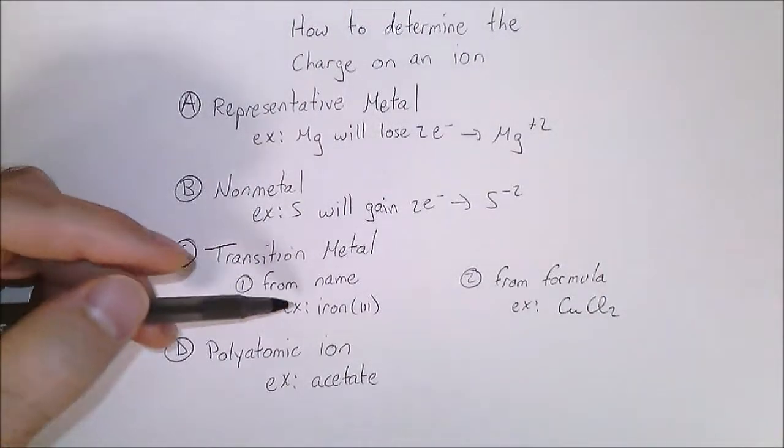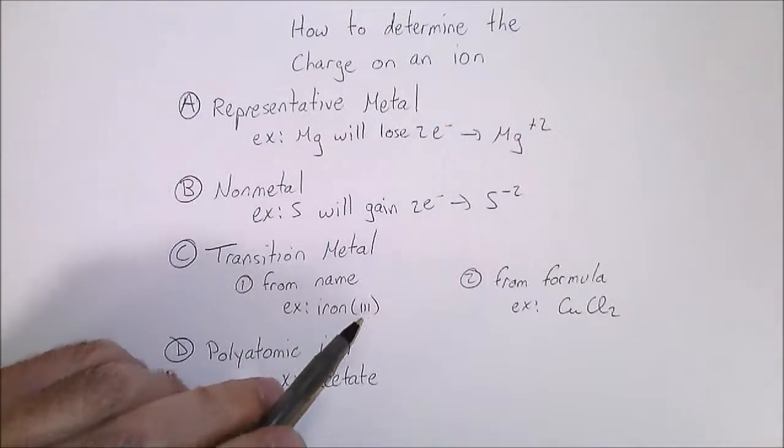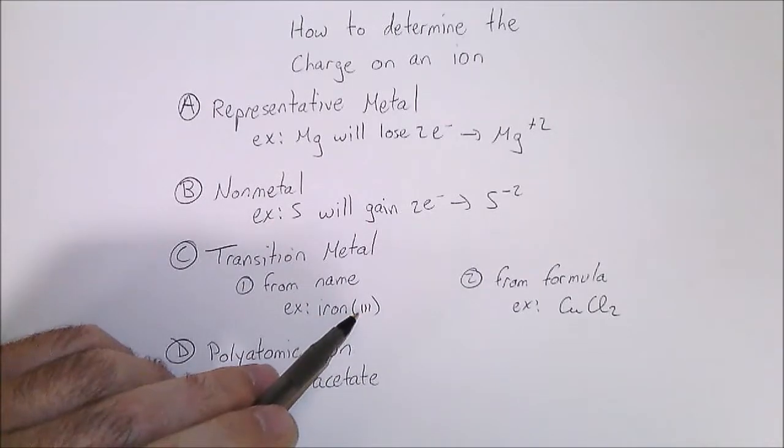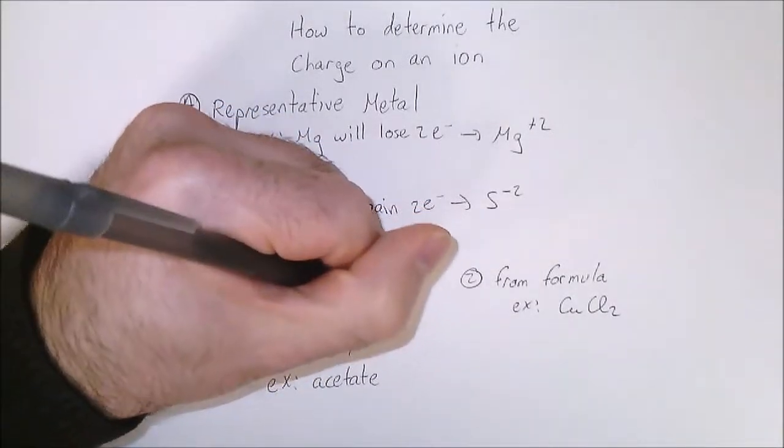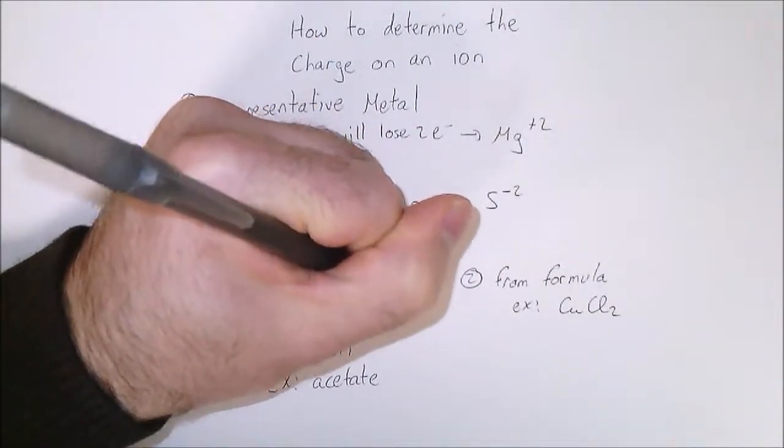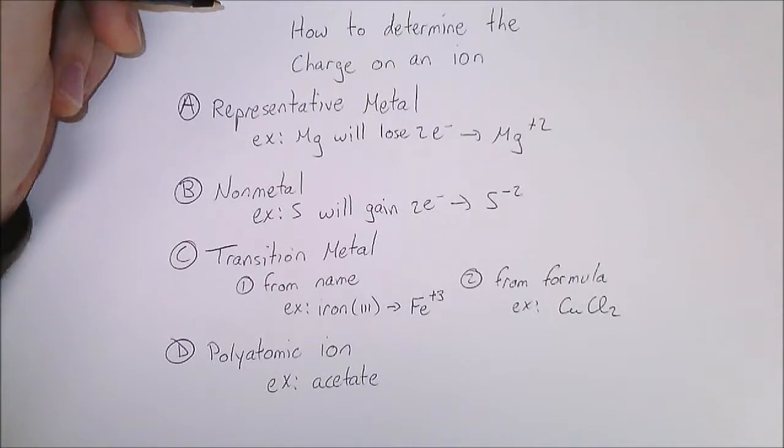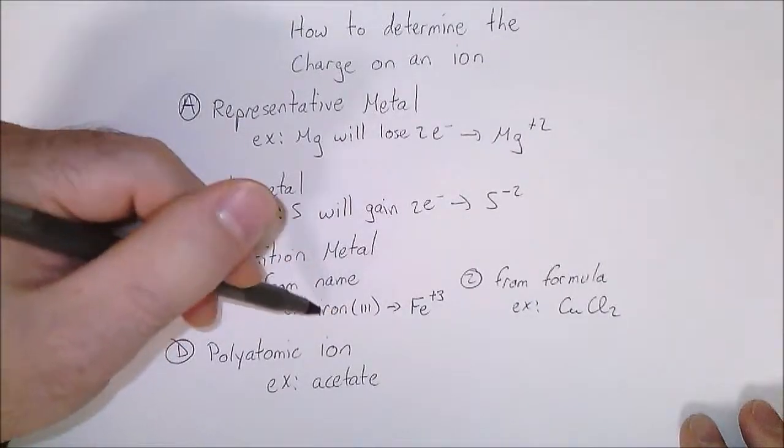So iron(III) is going to use a Roman numeral. Transition metals get Roman numerals. The Roman numeral tells you what the charge is on the iron itself. That's when you have the name already.